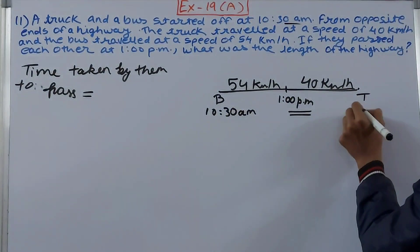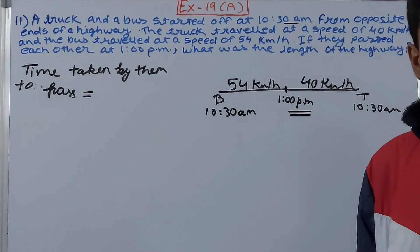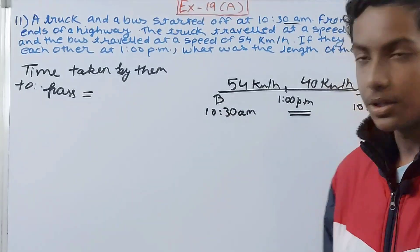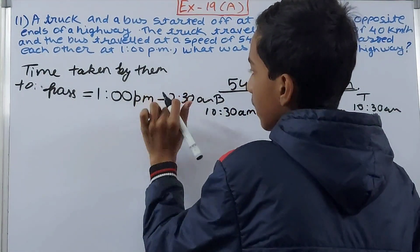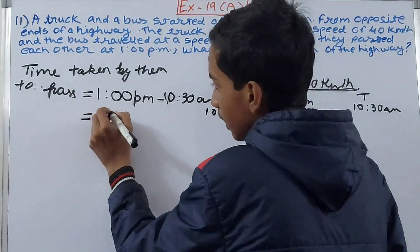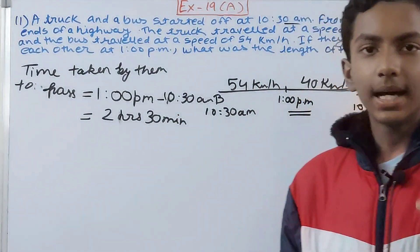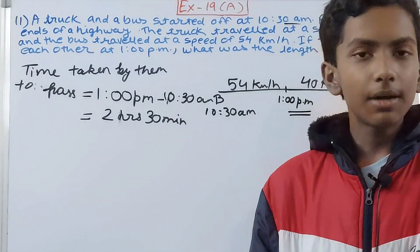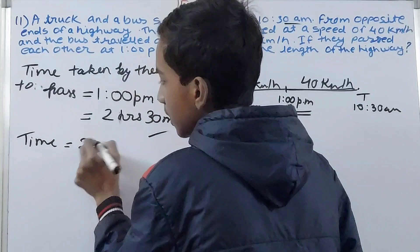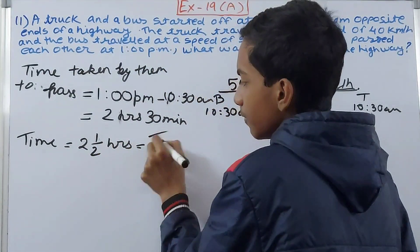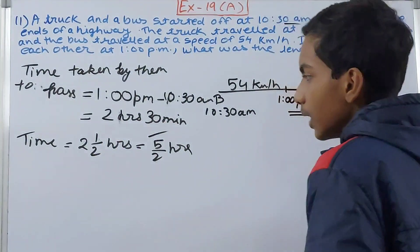The bus started at 10:30 a.m. and the truck also started at 10:30 a.m. So from 10:30 a.m. to 1 p.m. is the time both of them traveled. Calculating: 1 p.m. minus 10:30 a.m. gives us 2 hours and 30 minutes. So the time taken is 2 and a half hours, which is 5/2 hours.